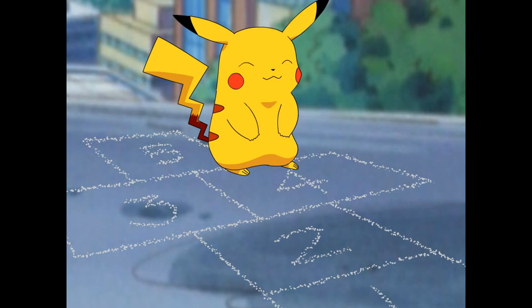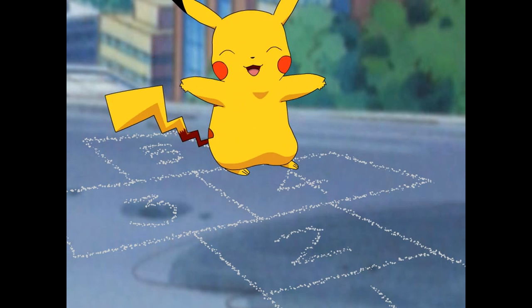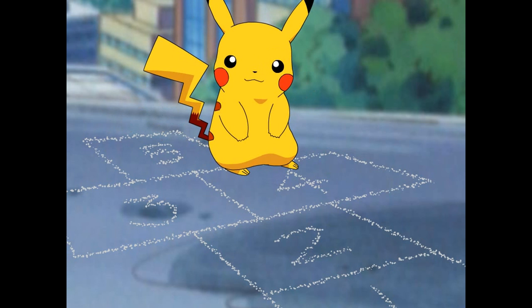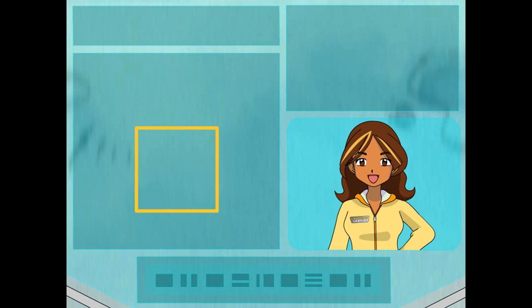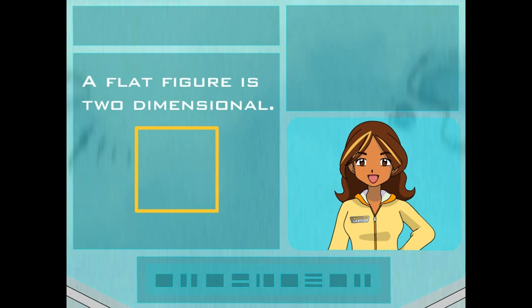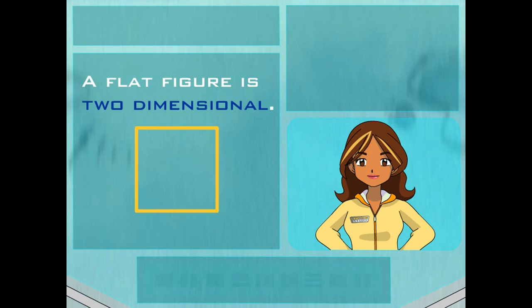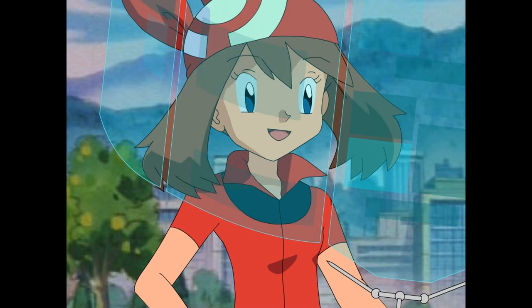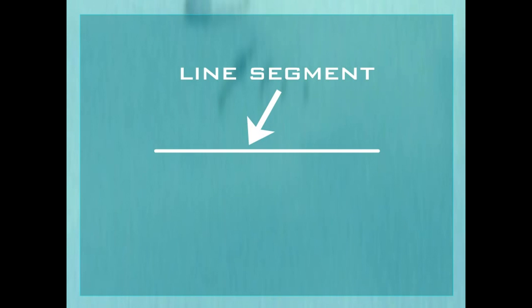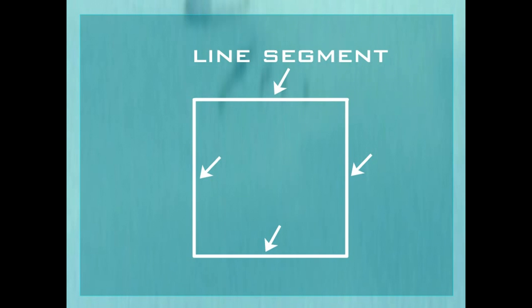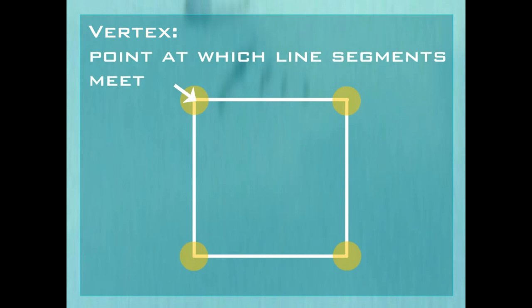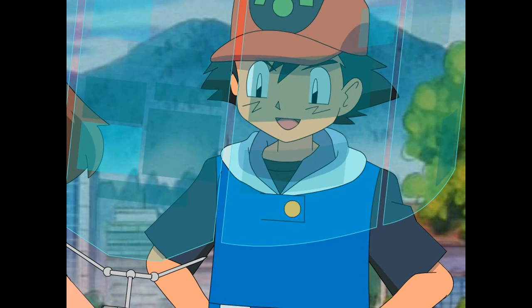See those squares on the sidewalk next to Pikachu? Look at one of the squares. The square is flat, right? Another way of saying a figure is flat is that it is two-dimensional. Do you know what a line segment is? It's a line with two endpoints. Right! The square is made up of four line segments. The point where line segments meet is called a vertex. It has four vertices — that's the plural of vertex. So the line segments and vertices form the sides of the square, right?